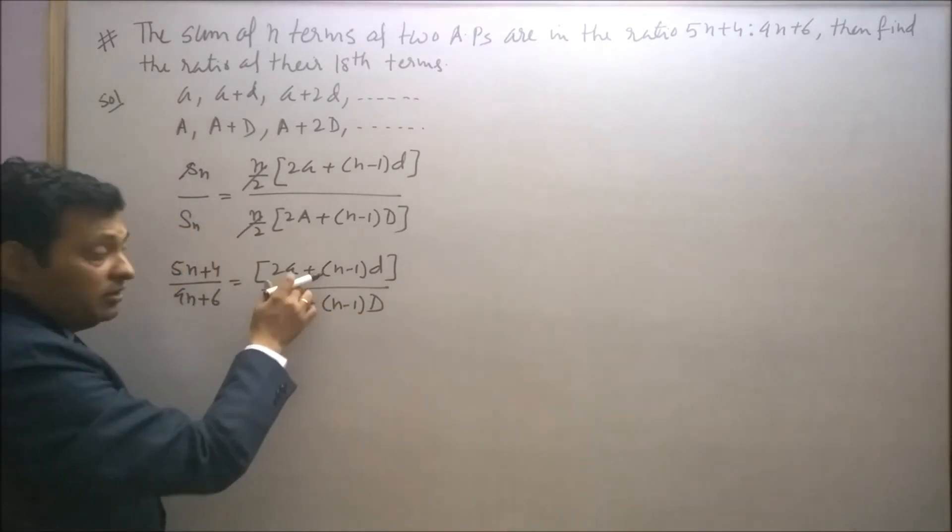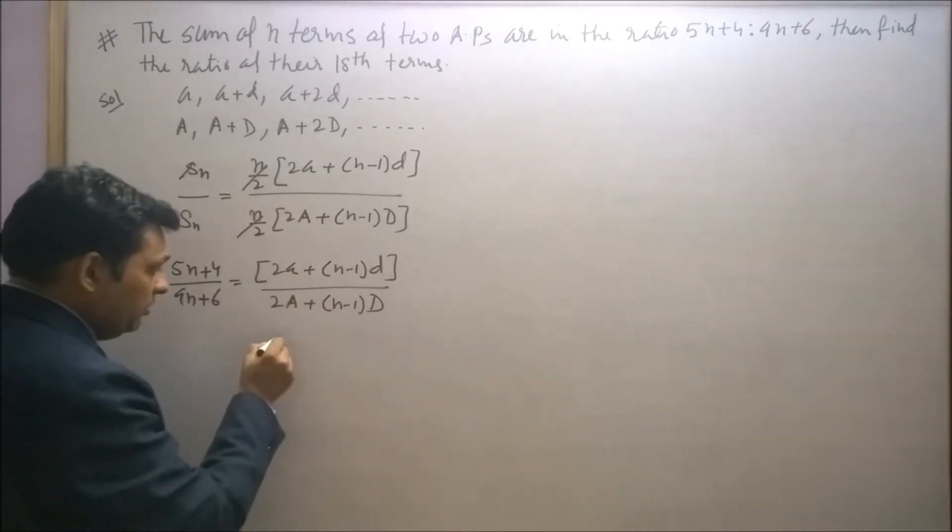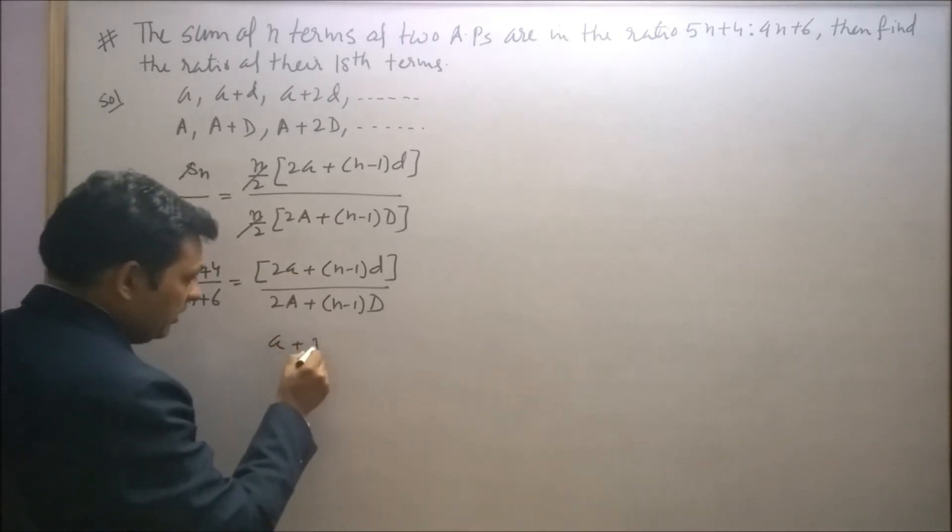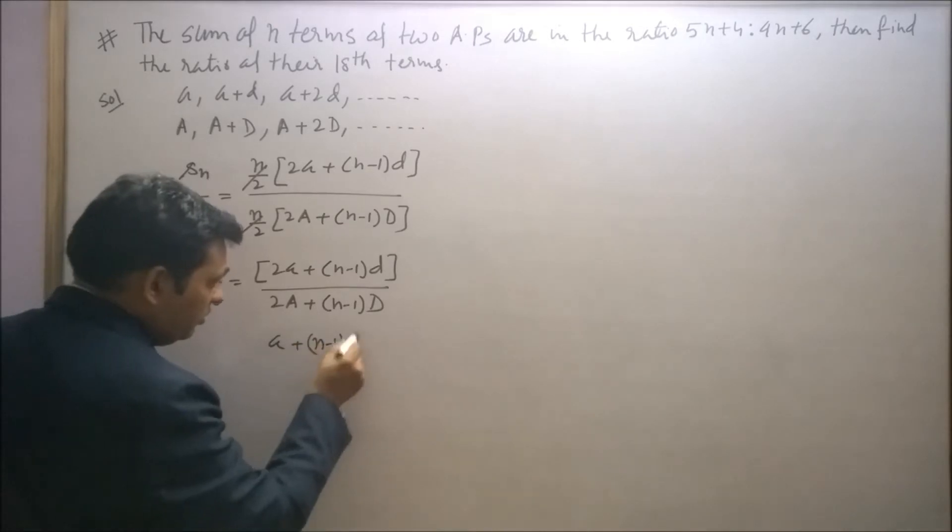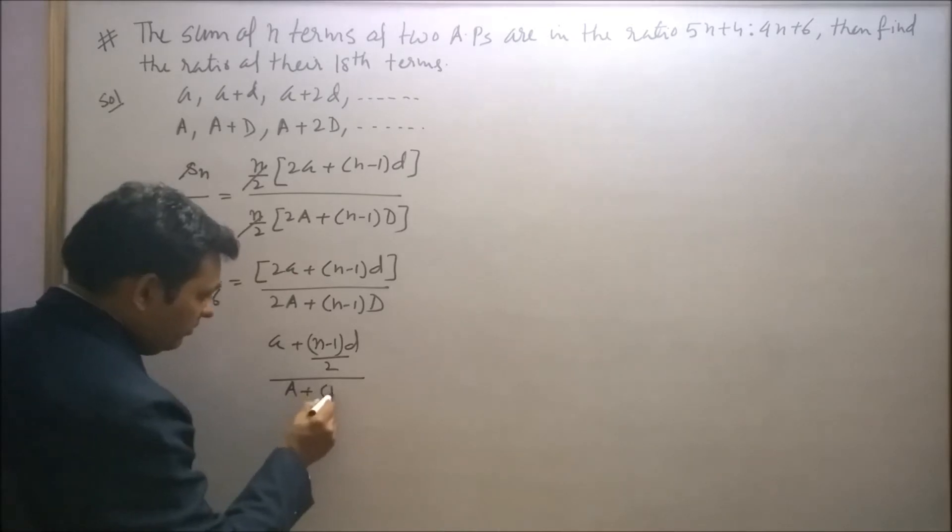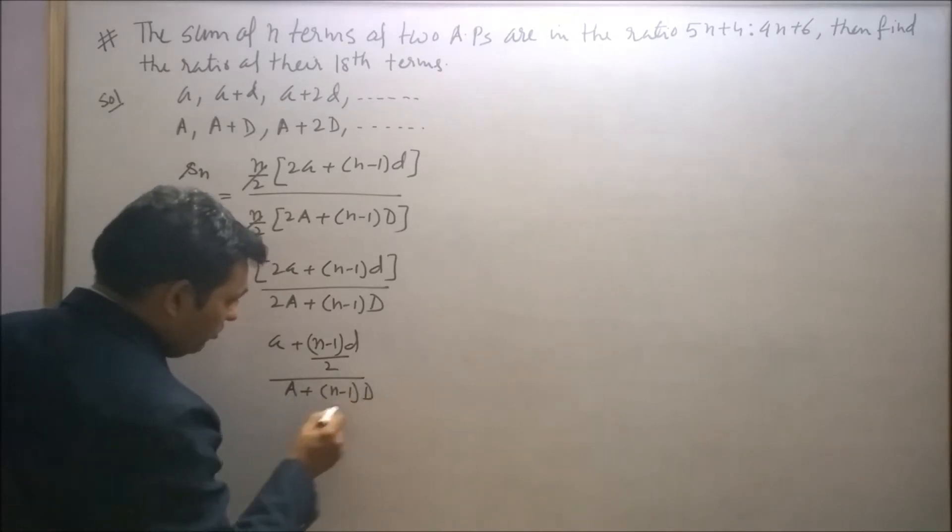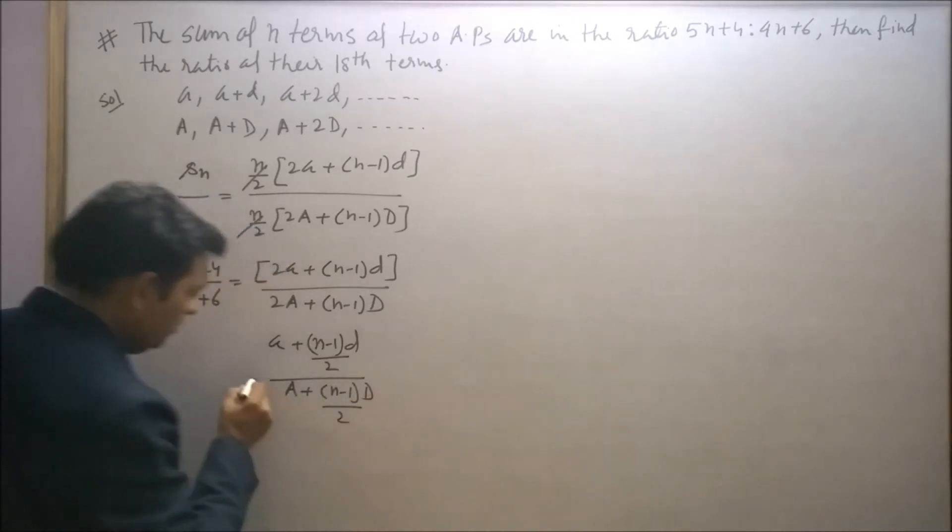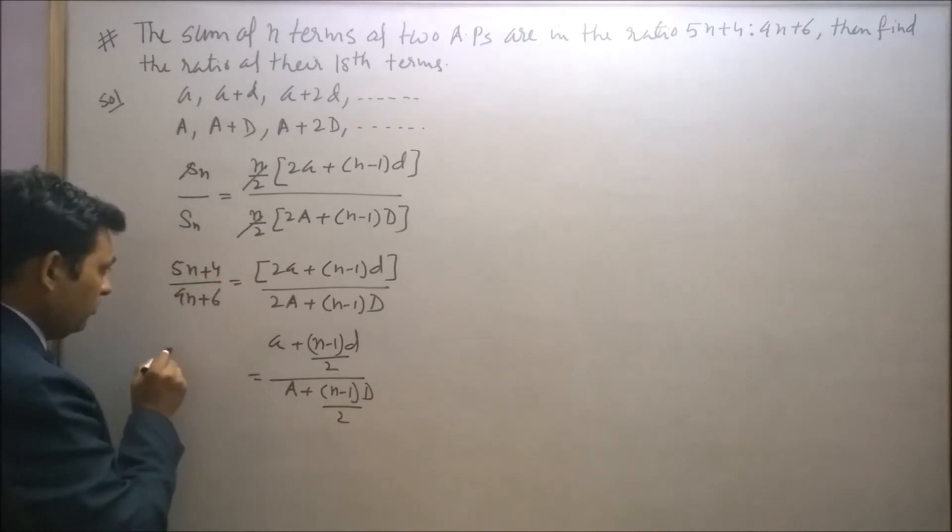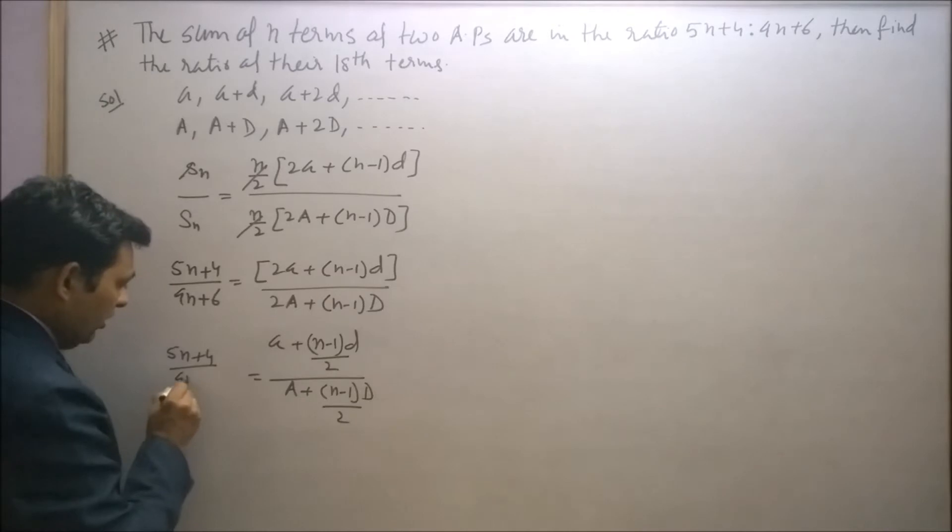Now in right hand side divide numerator and denominator by 2. So this will be written as a plus n minus 1 into d upon 2, upon capital A plus n minus 1 into d upon 2. This will be the ratio of 5n plus 4 to 9n plus 6.